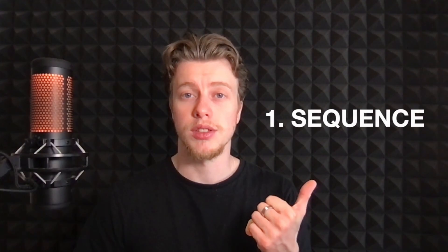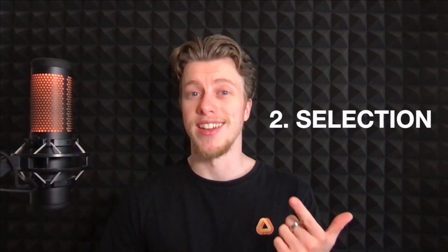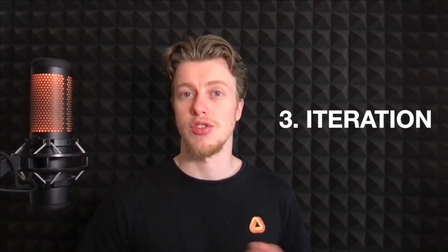That's number one, sequence. What order do things need to happen in? Number two, selection. Is there anywhere it needs to take a different path and do something different? And number three, iteration. Is there anywhere it needs to repeat a certain instruction?